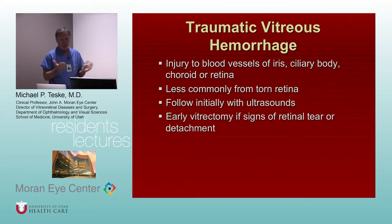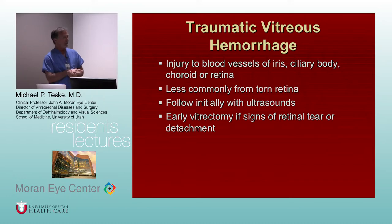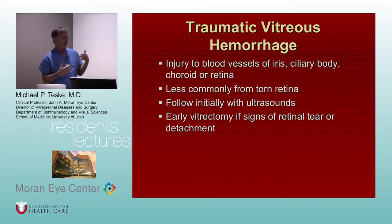What do we do with vitreous hemorrhages? Assuming everything else is okay, we usually follow them with ultrasound and ophthalmoscopy. But if they're not clearing and anything suspicious is showing up on ultrasound, then we do early vitrectomies. We would hold off on operating for traumatic vitreous hemorrhage where we couldn't visualize the retina.